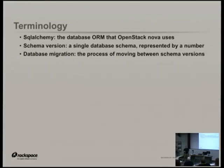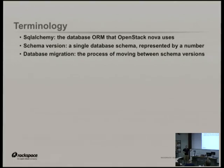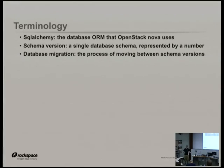A schema version is a particular point in time for the SQL database — the tables that exist, the columns, their types, the relationships, all of that. In SQLAlchemy, schema versions are identified by unique integers; it's just an incrementing counter, effectively. A migration is how you move between these schema versions. If we're running schema version 100 now and we upgrade, we'll end up running 101, and we get there by running a migration. A migration is just a Python function — there's an upgrade function and a downgrade function.